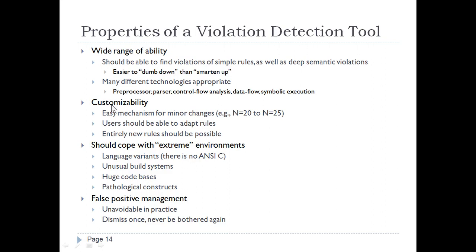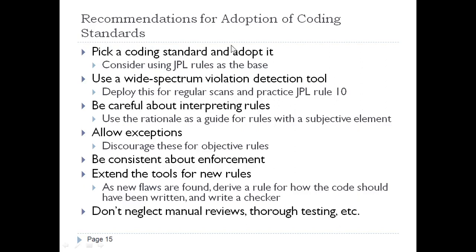Violation detection tools should have a wide range of ability, customizability, the ability to cope with extreme environments, and false positive management. For adoption of coding standards: pick a standard and adopt it; use a wide-spectrum violation detection tool; deploy it for regular scans; and practice JPL rule 10 — always have warnings enabled. Be careful interpreting rules, use the rationale as a guide, allow exceptions but discourage them for objective rules, and be consistent about enforcement.